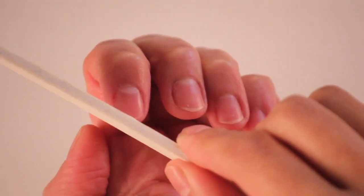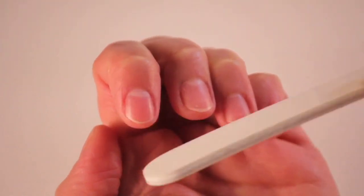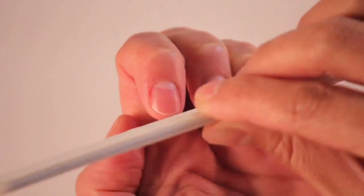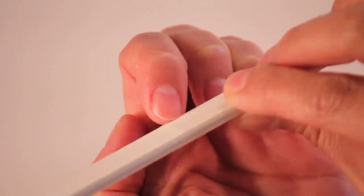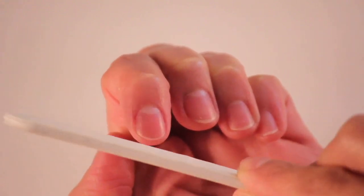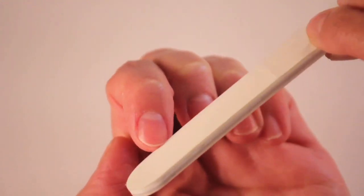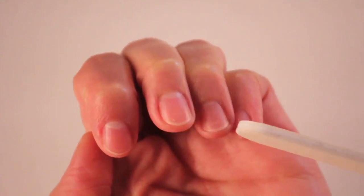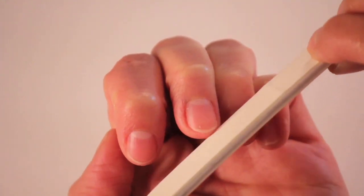Now you're going to grab your 180 file and shorten and shape your nails to the desired look and length. Always, always, always file in one direction. This is a key technique that will allow this process to go smooth.